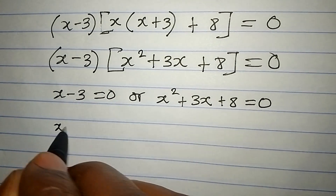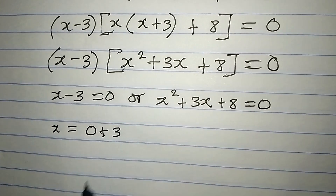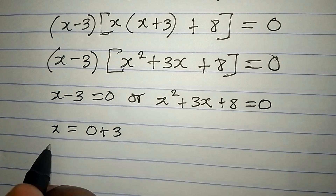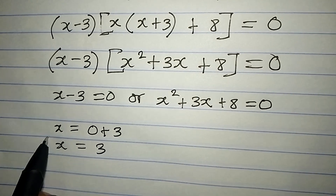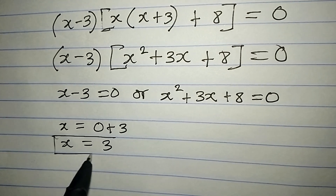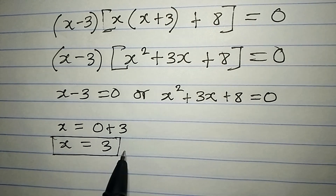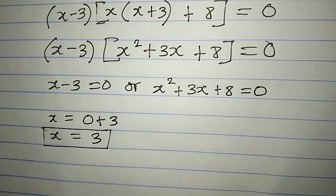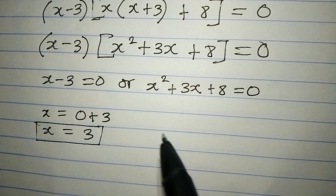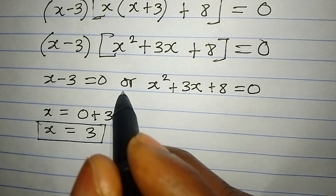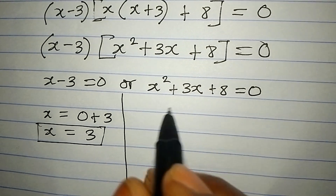From x minus 3 equals 0, we get x equals 3. So x₁ = 3 is the first solution to the problem. To get the other solutions we go to the quadratic equation x² plus 3x plus 8 equals 0. This is difficult to factorize, so we apply the formula method.